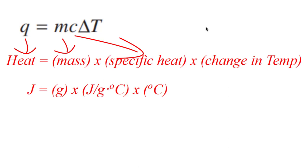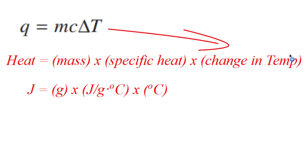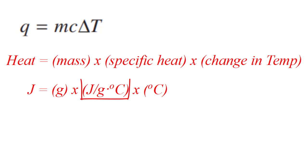C is specific heat or specific heat capacity. Delta T is the change in temperature. Heat is in joules, mass is in grams. Specific heat capacity is the capacity of a substance to absorb or release heat, and that is in units of joules per gram per degree Celsius, or joules per gram Kelvin — Kelvin, not degrees Kelvin — because the change in temperature whether in degrees Celsius or Kelvin is the same.